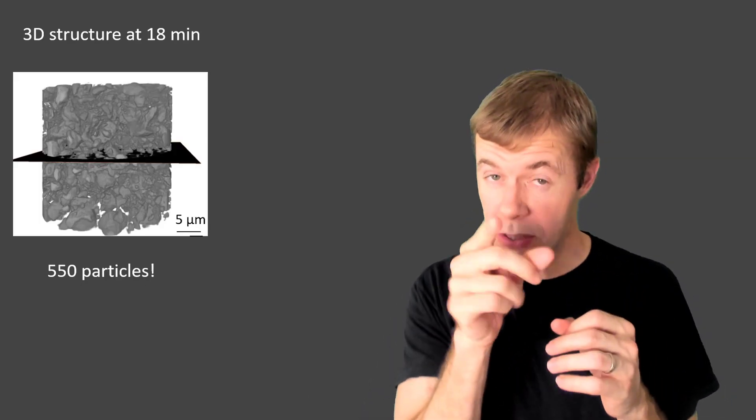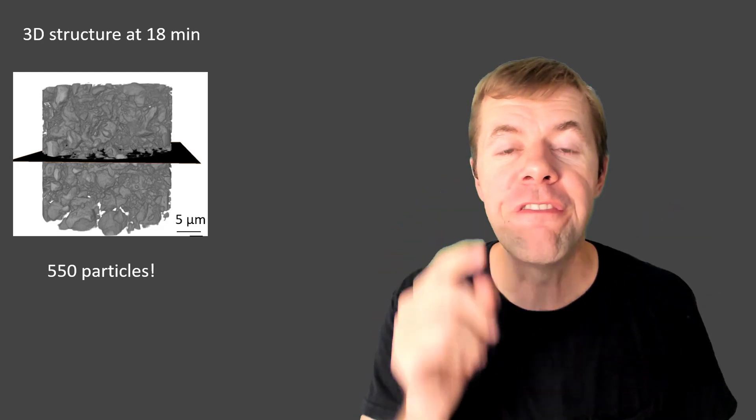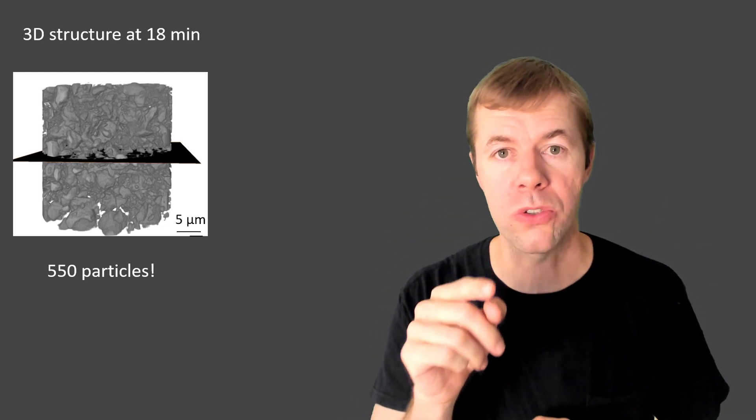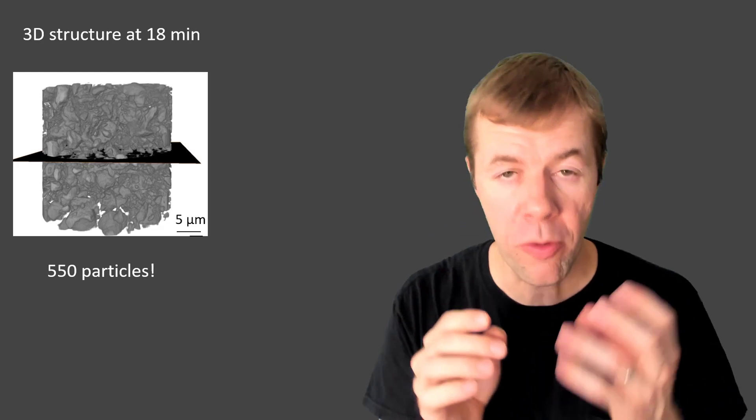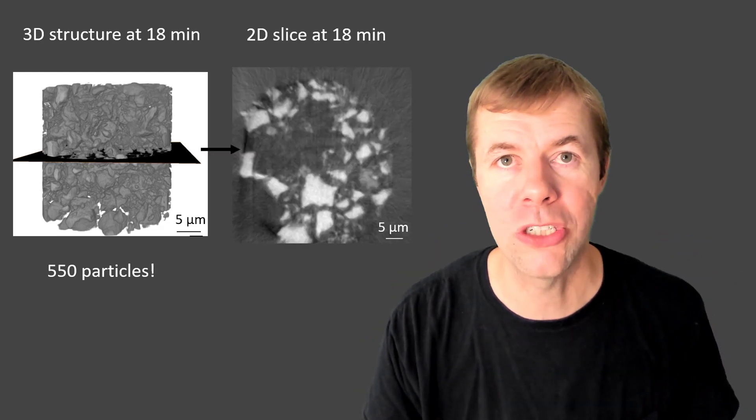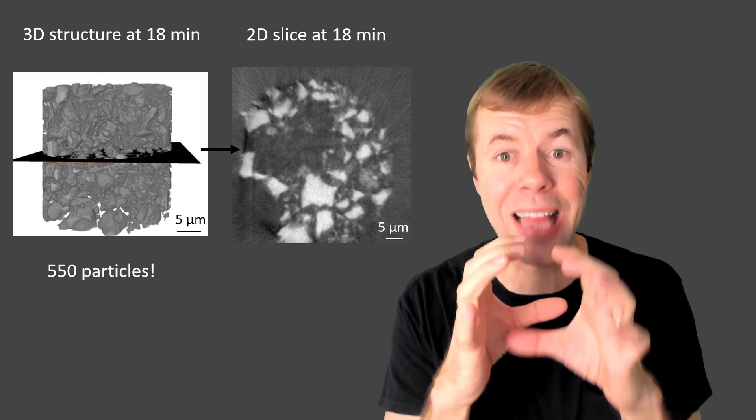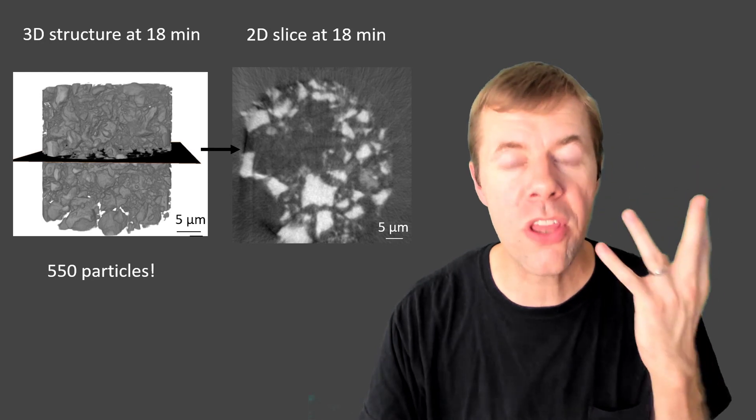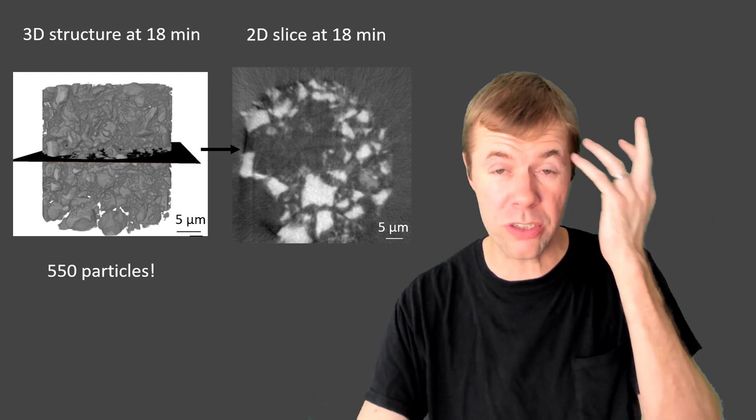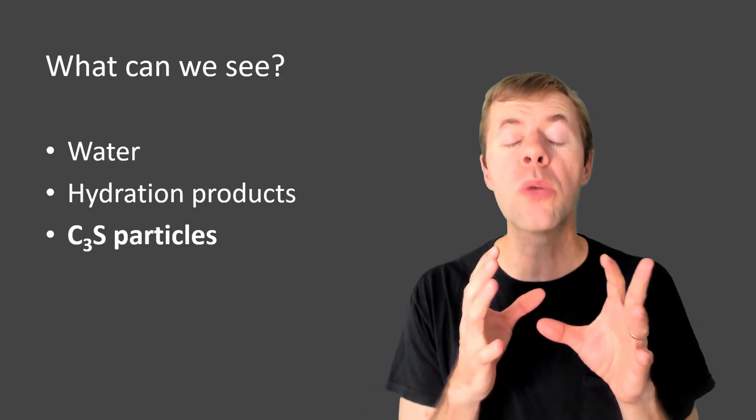And this is what one of those images looks like. This is the 3D image at 18 minutes and we're able to see 550 particles and we can watch them from 18 minutes up to 7 hours and how they change. Now we're also gonna be looking at 2D slices and that's just a way for our brains to think about it because 3D is kind of hard for us sometimes but the 2D sometimes make things easier.